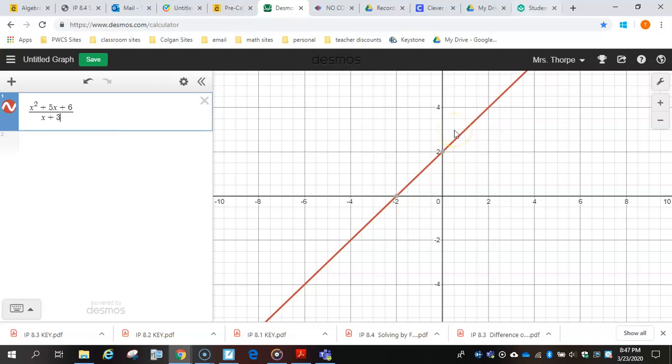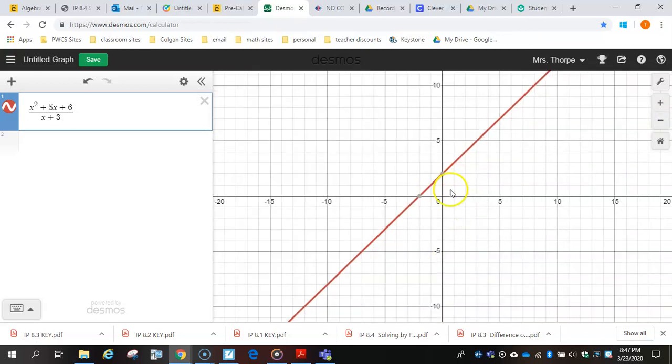And it gives me this linear function. So from here, let me zoom out. I could find my y-intercept, which is 2, and see that my slope is 1. So that would be 1x plus 2, which happened to be the answer. And you see that this line lined up right over top.